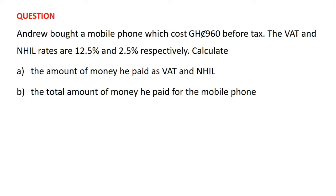The problem for this video is: Andrew bought a mobile phone which cost 960 Ghana cedis before tax. The VAT and NHIL rates are 12.5% and 2.5% respectively. Calculate: A, the amount of money he paid as VAT and NHIL; and B, the total amount of money he paid for the mobile phone.